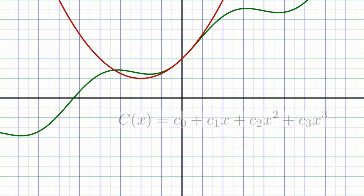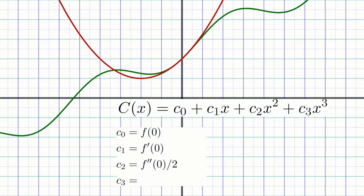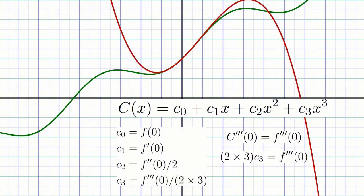This pattern continues for a cubic approximation. We need to determine four coefficients: c0, c1, c2, and c3, but c0 through c2 are already determined from last time. We just need to determine c3. And we can get that by requiring that the third derivative of the cubic approximation at x equals 0 equals the third derivative of f at x equals 0. Or in other words, c triple prime of 0 equals f triple prime of 0. Doing so, we get 2 times 3 times c3 equals f triple prime of 0, which means c3 equals f triple prime of 0 divided by 2 times 3.